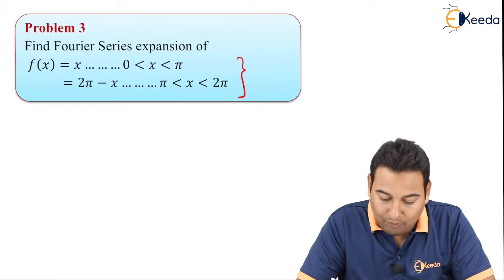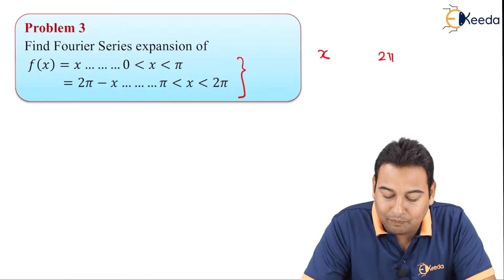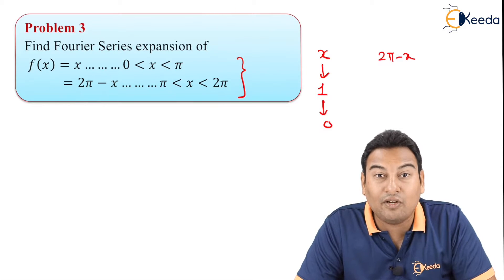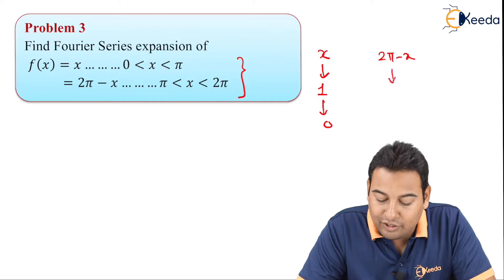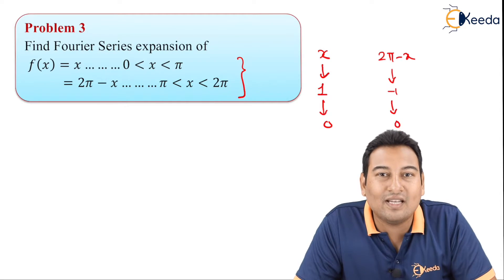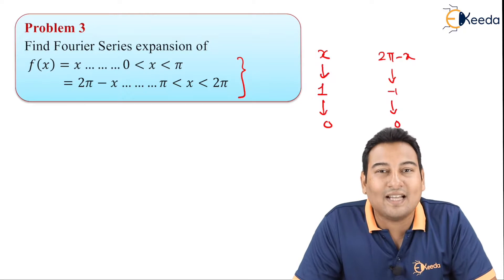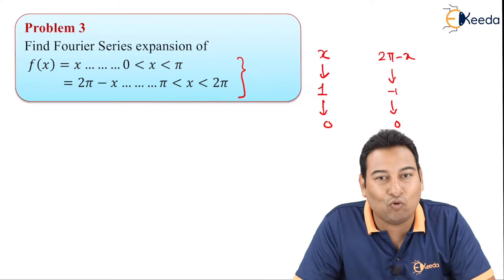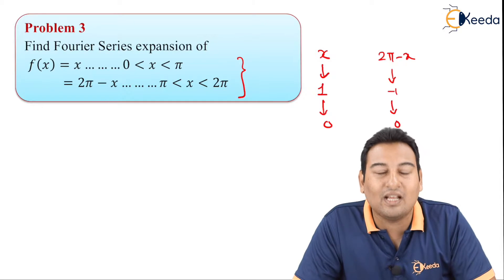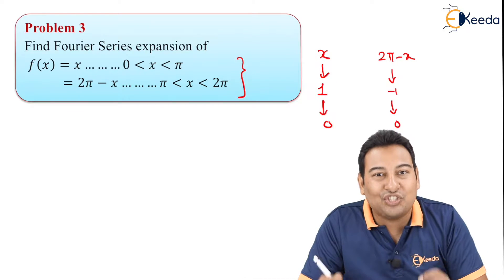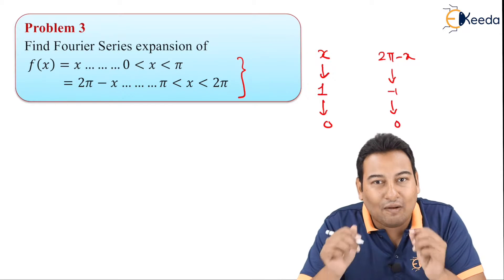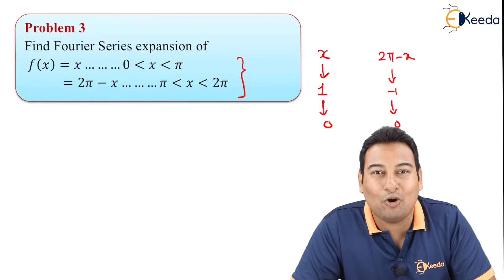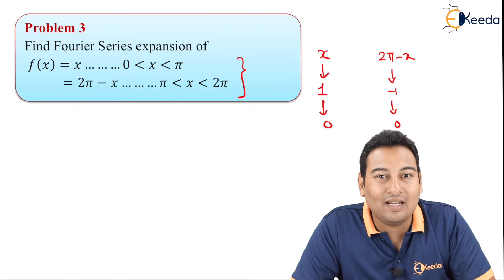If you observe the problem, we have x as well as 2π minus x. The derivative of x is 1, next derivative is 0. The derivative of 2π minus x is -1, next derivative is 0. Key values: derivatives of cos(nx) give sin(nx)/n, and sin(nx) gives -cos(nx)/n. Also, sin(nπ) = 0, cos(nπ) = (-1)ⁿ, and cos(2nπ) = 1. These are the things required in the problem.